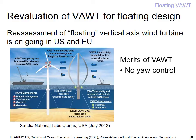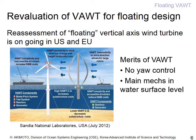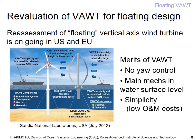It does not require yaw control because the performance of a vertical axis turbine does not depend on wind direction. The heavy electromechanics can be installed at lower levels near the water surface, leading to a simpler mechanism and low operation and maintenance costs. It also reduces the center of gravity height and can reduce the size of the float system, which is very helpful for reducing the cost of energy produced by the offshore wind turbine.